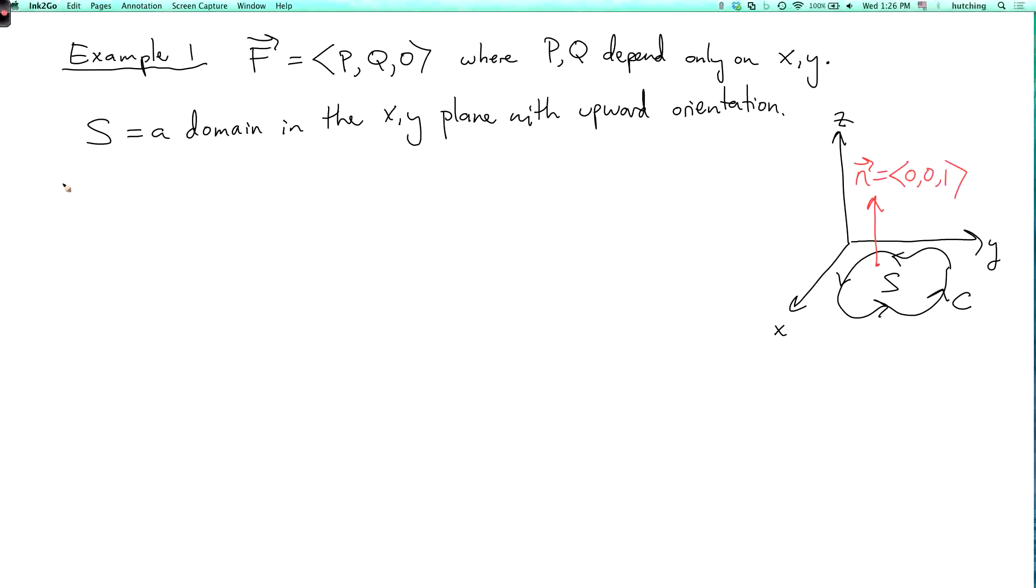So what does Stokes' theorem say? Stokes' theorem says that the integral over c of f dot dr is the double integral over s of the curl of f, del cross f dot ds, or I can write this as dot n ds for the element of arc length. So this is equivalent to ds.